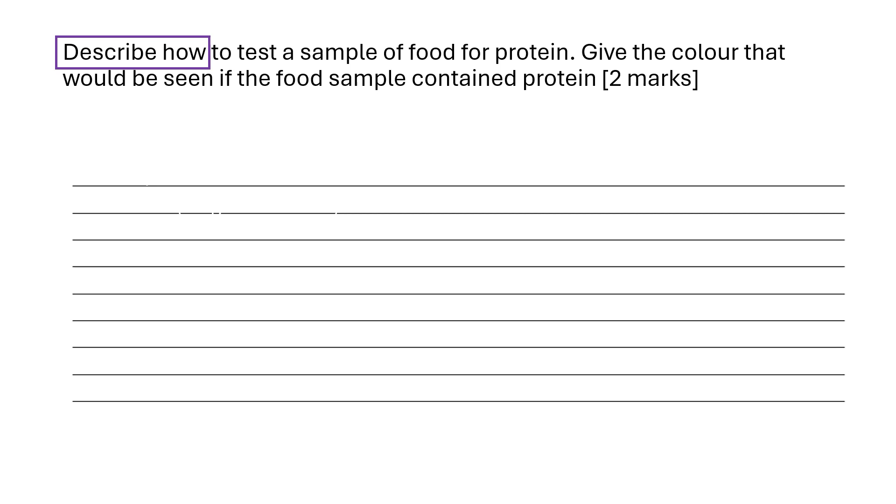So first of all it's a describe question, so we need to describe the method and we need to know what we're using to test for protein, which would be the biuret solution. We've also got to state the color, so we want to state what color it was before and what color it will change to with a positive result for protein.